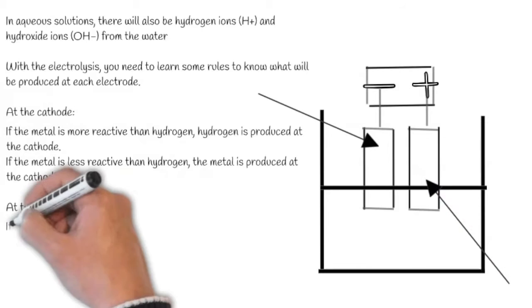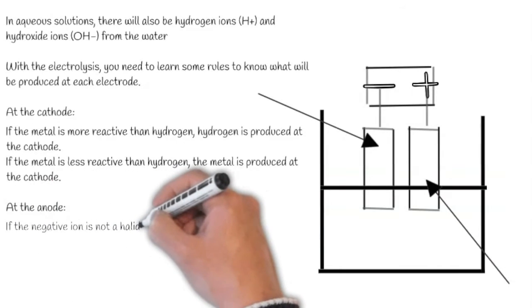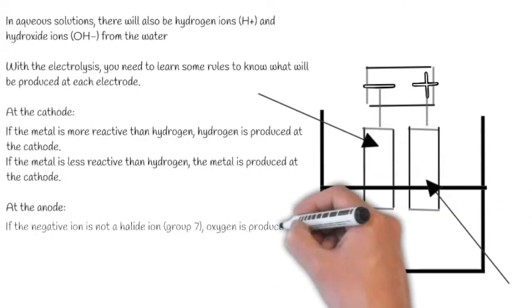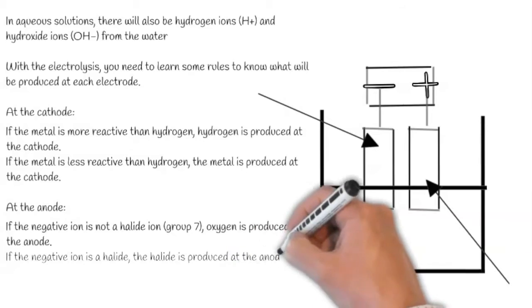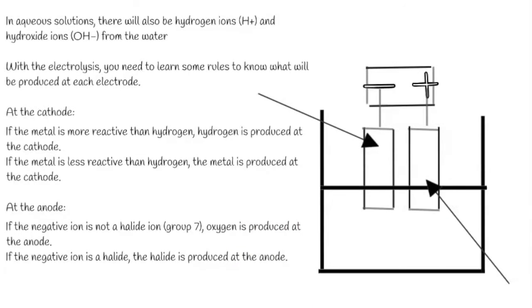At the anode, which is here, if the negative ion is not a halide, i.e. in group seven, oxygen is produced at the anode. If the negative ion is a halide, the halide is produced at the anode.